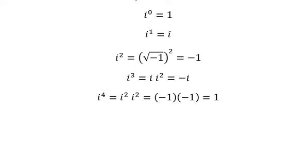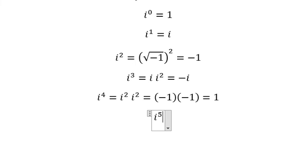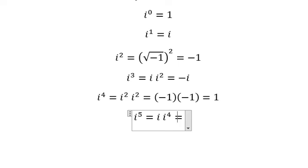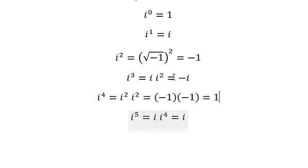i to the power of five equals i multiplied by i to the power of four, and since i^4 equals one, we get i. So the cycle repeats: i^5 is the same as i^1, i^6 is the same as i^2, and so on.